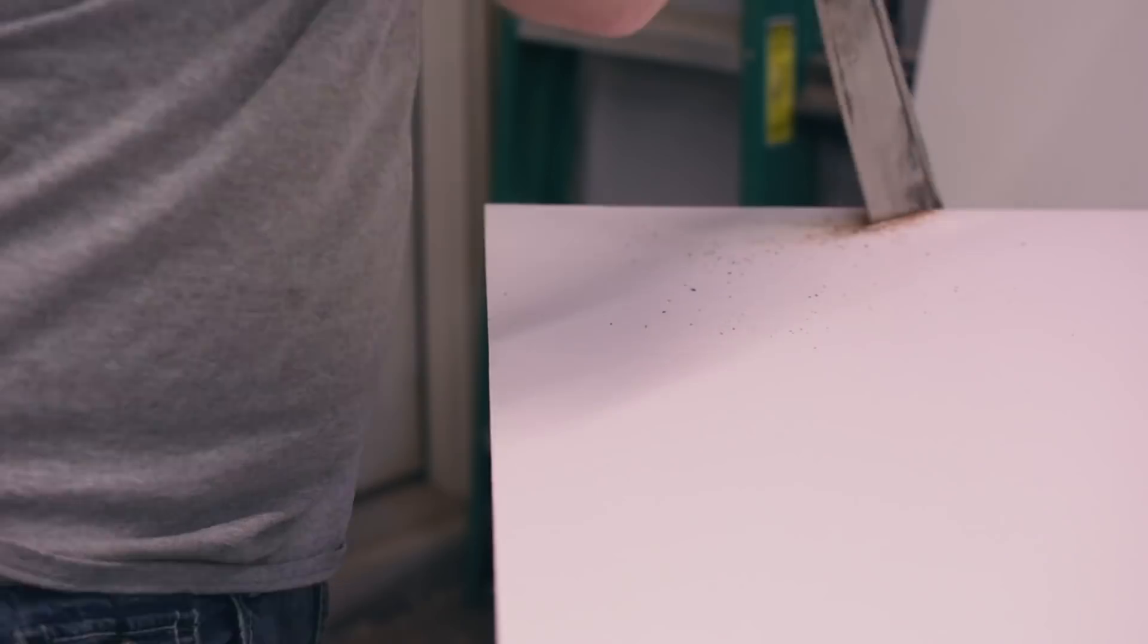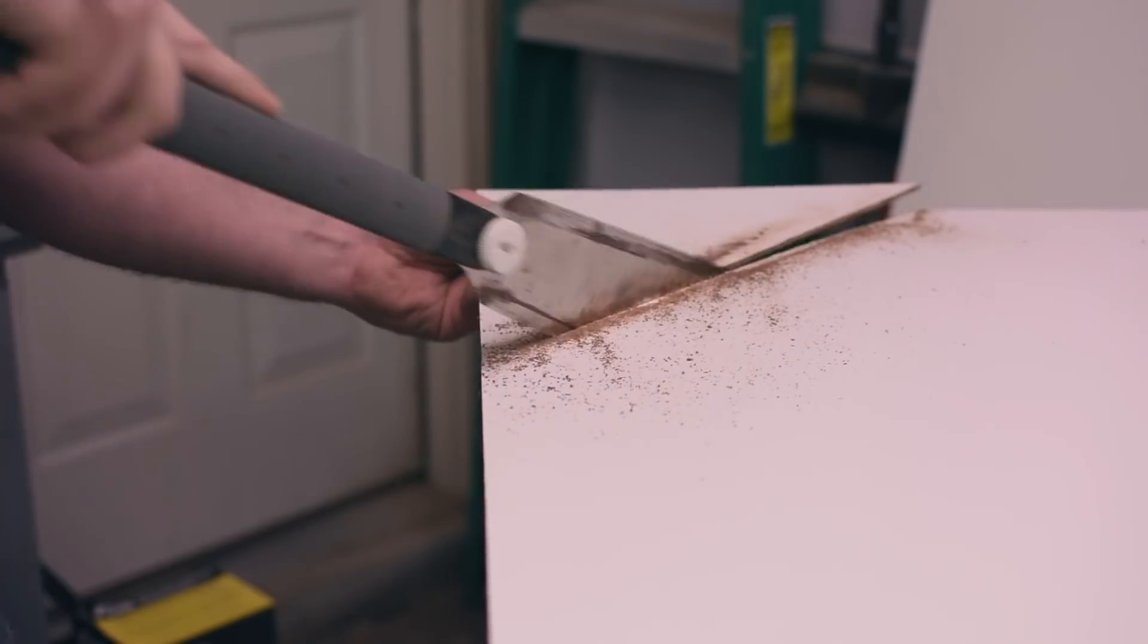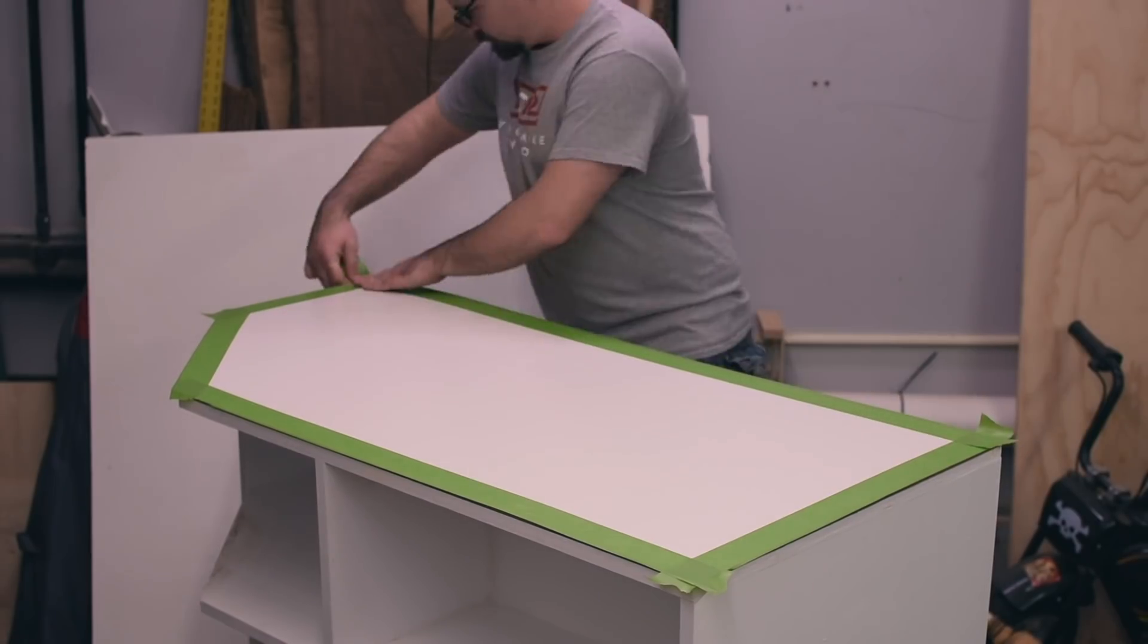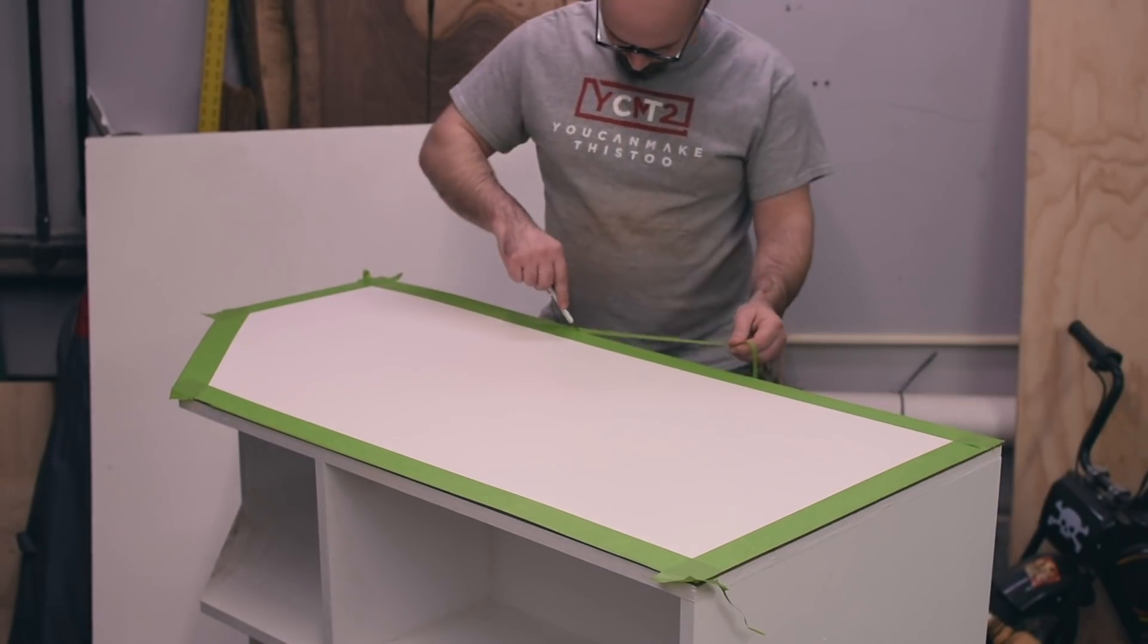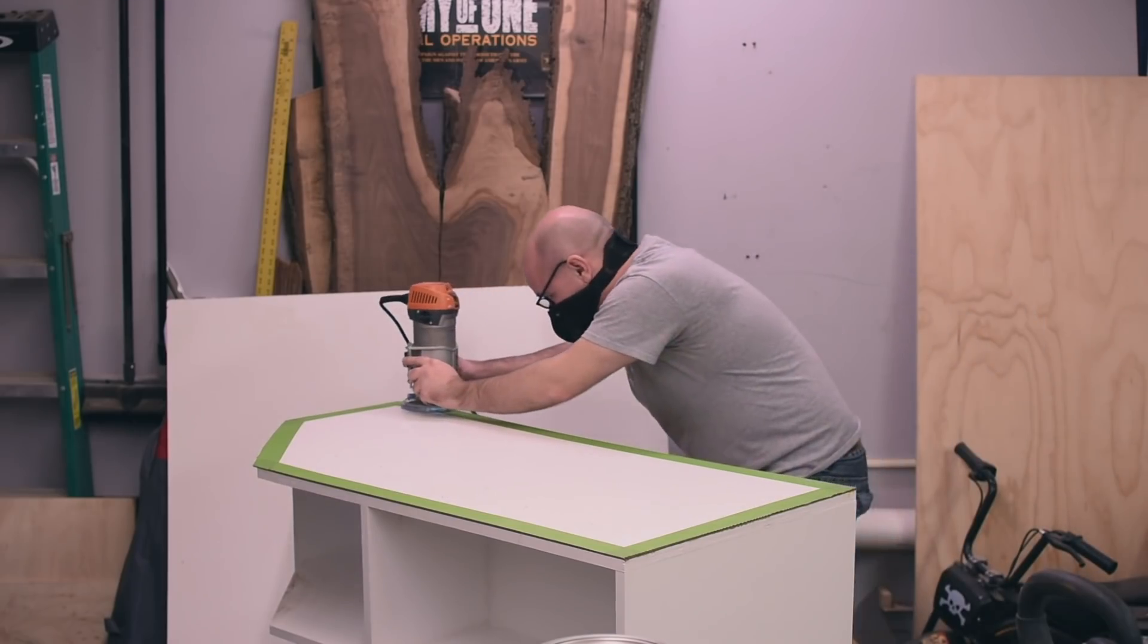After the glue dries I flush cut the edges with the pattern bit in the router, but first I tape off all the edges to try to minimize tear out. This didn't work as well as I hoped but I think it did help some.